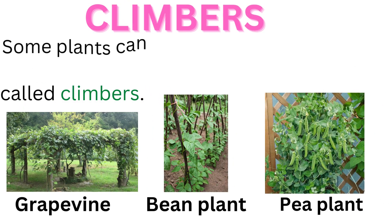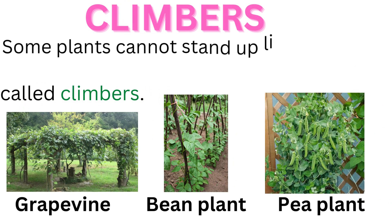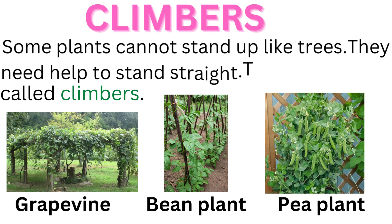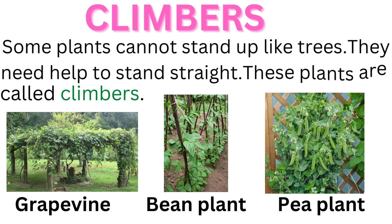Climbers. Some plants cannot stand up like trees — they need help to stand straight. These plants are called climbers. Examples include grapevine, bean plant, and pea plant.